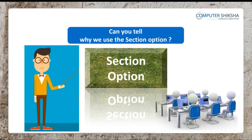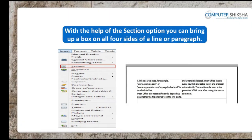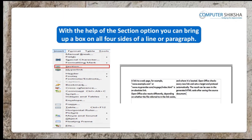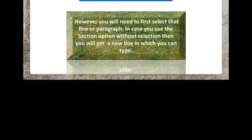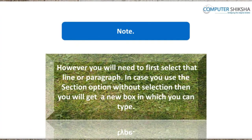Can you tell why we use the Section option? With the help of the Section option, you can bring up a box on all four sides of a line or paragraph. However, you will need to first select that line or paragraph. In case you use the Section option without selection, then you will get a new box in which you can type.